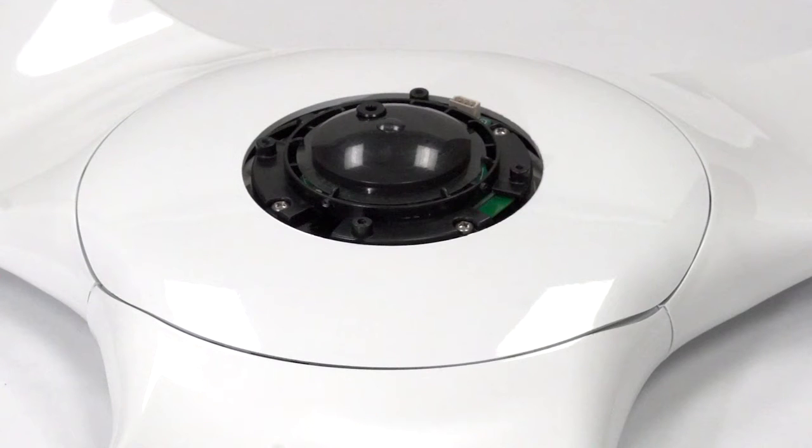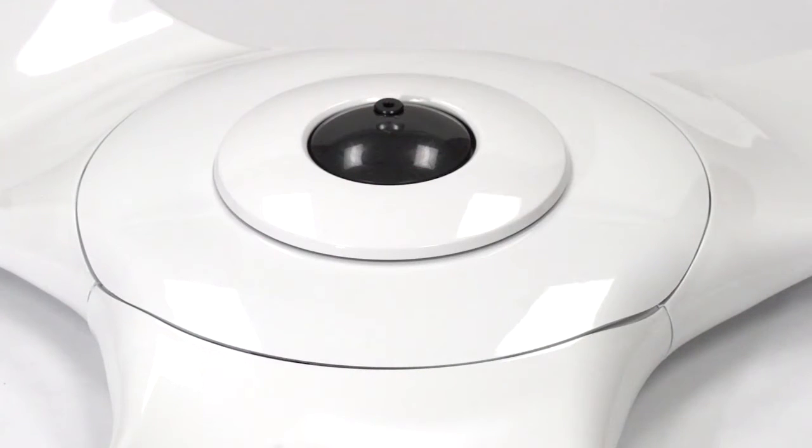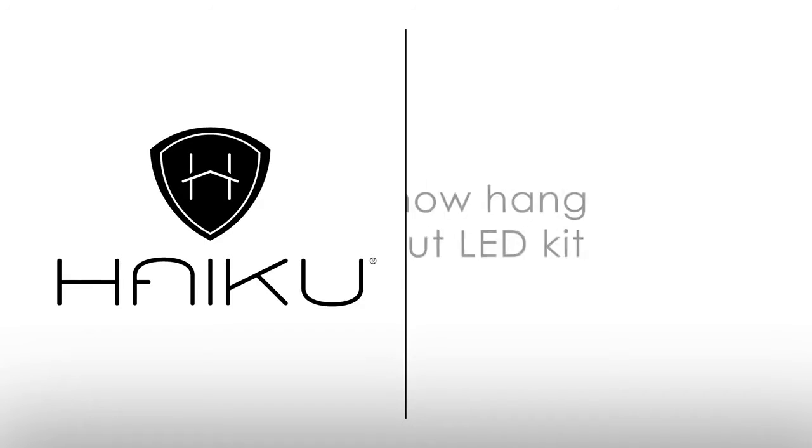If you did not purchase the LED light kit, you will now install the lower cover trim on the fan hub. Align the four slots on the lower cover trim with the four small round tabs on the bottom of the fan hub. Turn the lower cover trim clockwise to lock it into place. You're now ready to begin mounting the fan without the LED light kit.